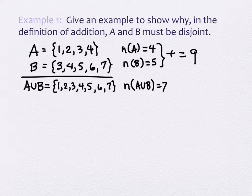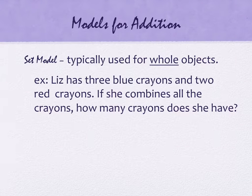What we're going to do next is look at models of addition, and then models of subtraction as well. One model for addition is called the set model. It's typically used for whole objects, and this is an example of the set model. Liz has three blue crayons and two red crayons. If she combines all the crayons, how many crayons does she have?